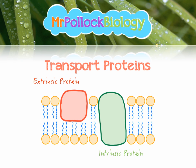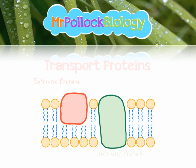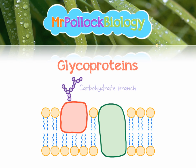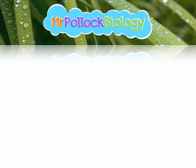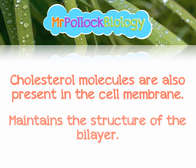The extrinsic proteins have more of a role in cell signaling, in combination with our next feature of the cell membrane: glycoproteins. Glycoproteins are where we have an extrinsic protein associated with a carbohydrate branch. These carbohydrate branches can also be on intrinsic proteins, but they act as a receptor for cell signaling or hormones. The final component we need to know about is cholesterol — the role of cholesterol is to add a little bit of stability to the membrane and maintain the structure of the bilayer.